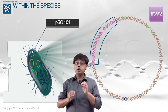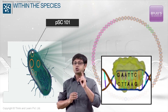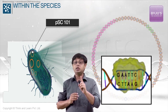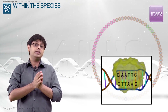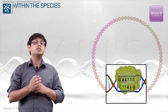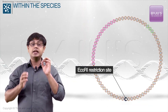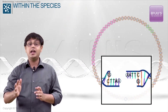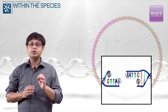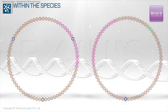The plasmid was mainly chosen because it contains just one GAA-TTC base sequence, which is the restriction site for the restriction endonuclease ECO-R1, which cleaves between the G and A bases within this sequence.